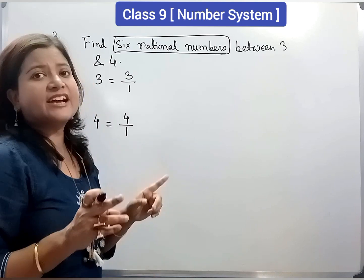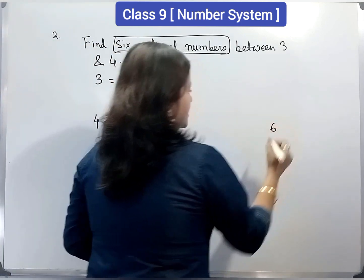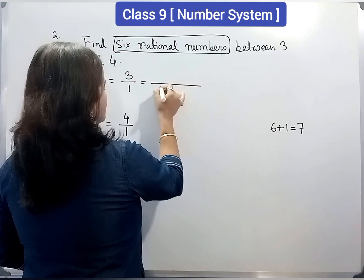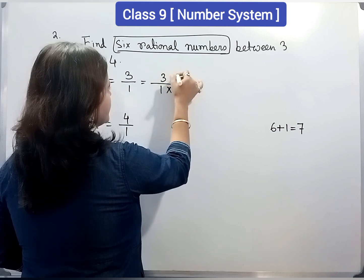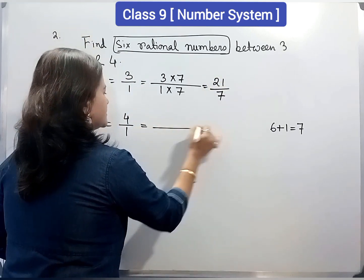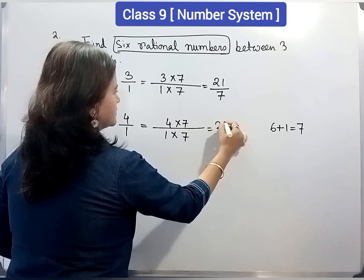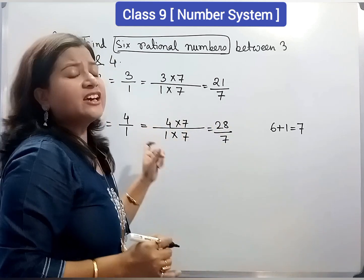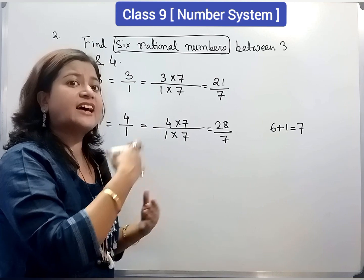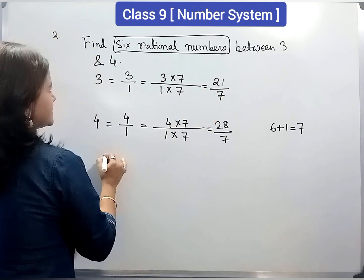Now, we have to find 6 rational numbers in between. That's why we will multiply numerator and denominator by 6 plus 1, 7. Similarly, 1 into 7, 4 into 7. We cannot multiply numerator and denominator by a number less than 6. More than 6, we have to multiply numerator and denominator. So, now 6 rational numbers.